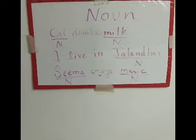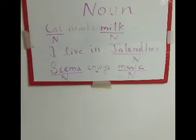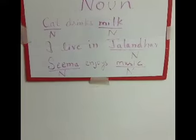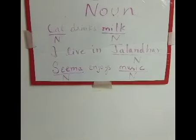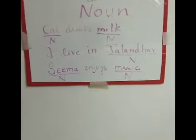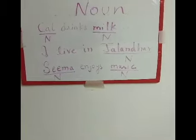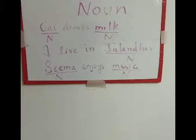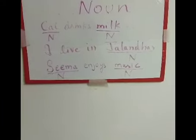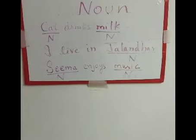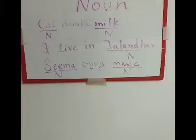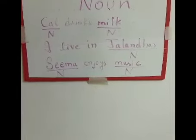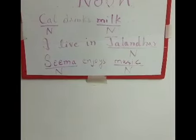Next sentence: 'Seema enjoys music.' Seema is someone's name, so it is a noun. And music is also the name of a thing or idea, so music is also a noun here. In this way, you can very easily find nouns in your sentences.